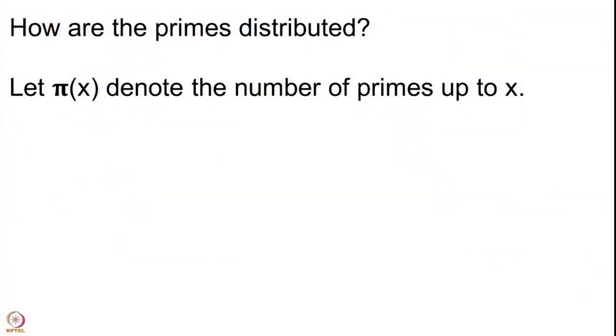Two well-known mathematicians, Legendre and Gauss, studied this question in the 19th century. To explain this, let me build a small notation. For any positive real number x, I will denote by π(x) the number of primes up to x. So π(2) = 1, π(3.5) = 2, π(4) = 2, π(4.5) = 2, π(5.1) = 3 because you have 2, 3, and 5 — three primes up to 5.1. And π(1.5) = 0 because there is no prime up to 1.5.